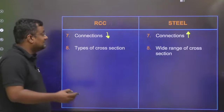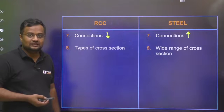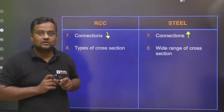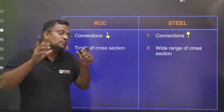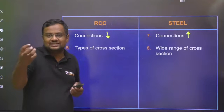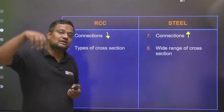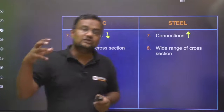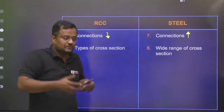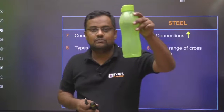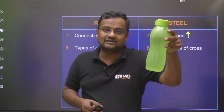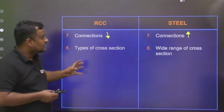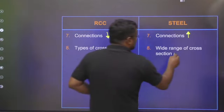Regarding cross-section shapes: you might see arches in RCC but not in steel. RCC can be molded into any desired shape through a casting process. In its initial state, RCC is like a gel — once you pour it into a mold or container, it takes that shape, and after it hardens it becomes stable concrete. So any desired shape is possible with RCC. However, the wide range of standard cross-sections available in steel is not possible with RCC.